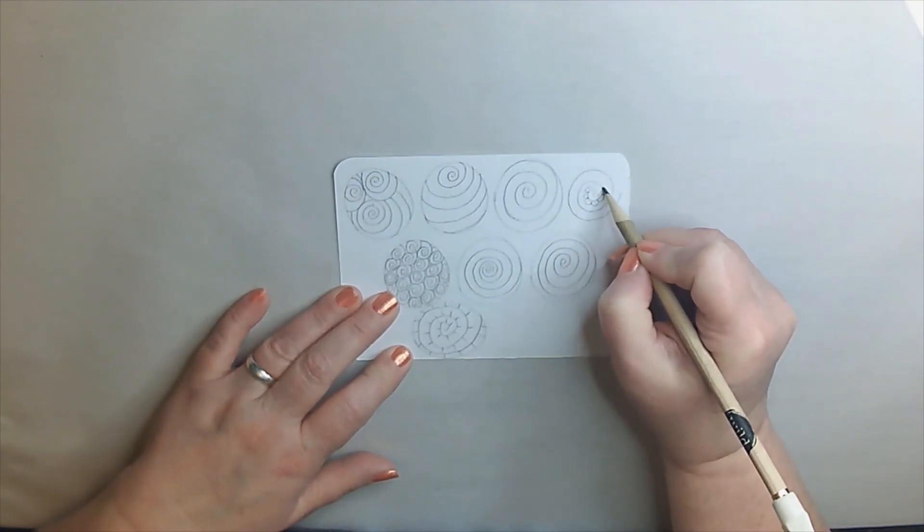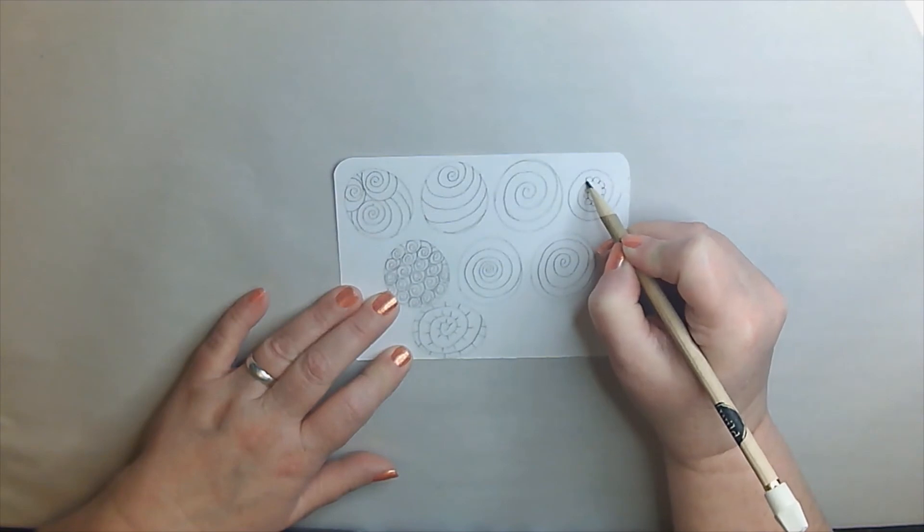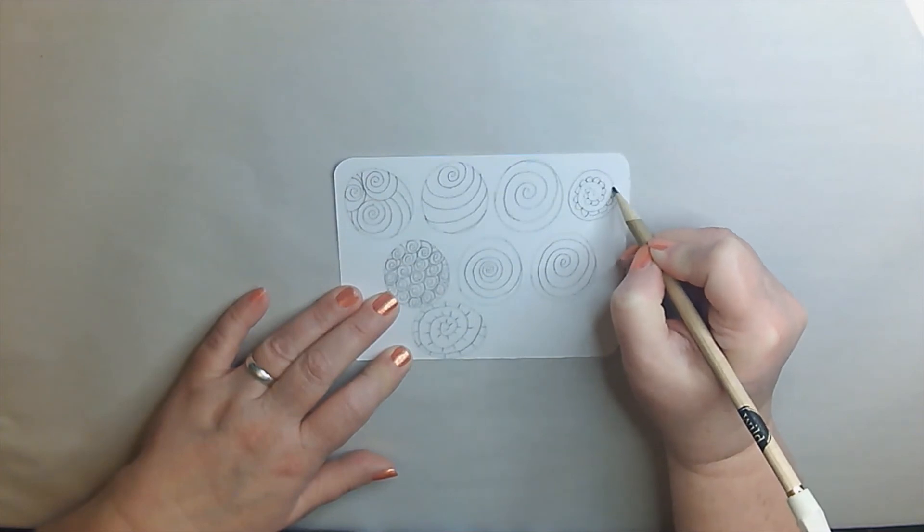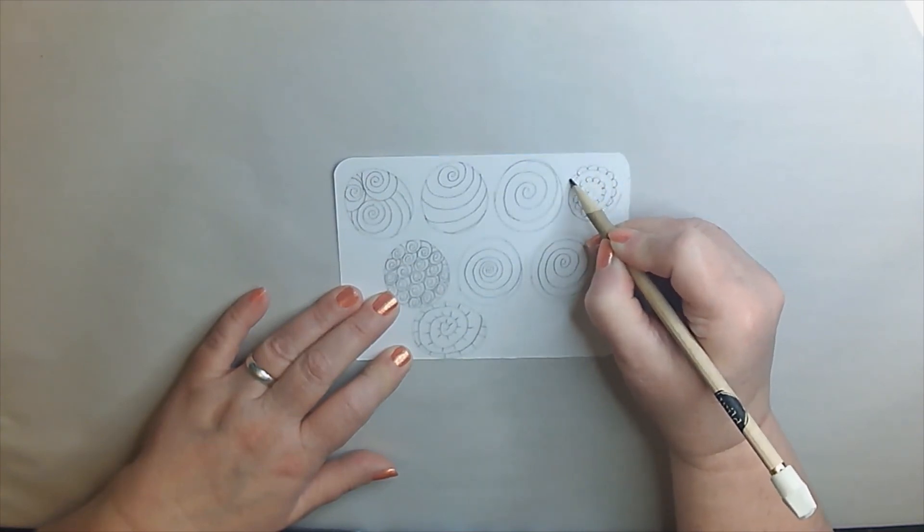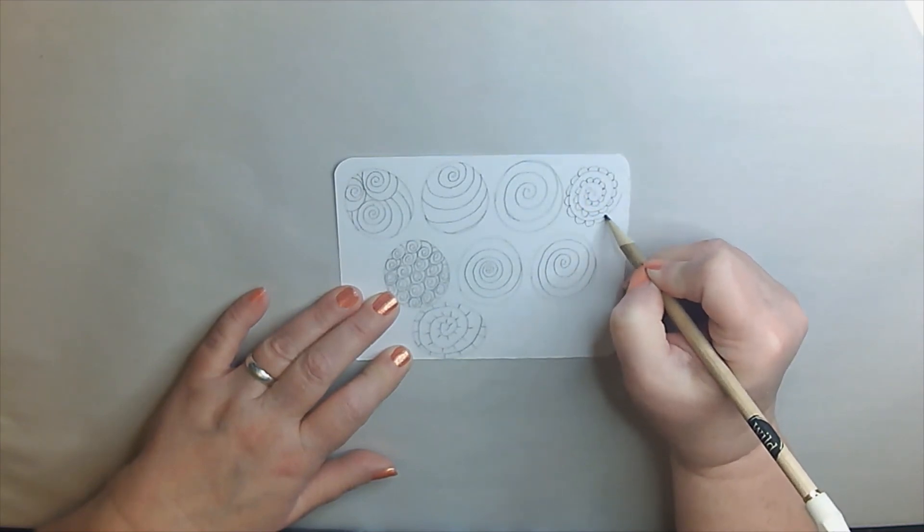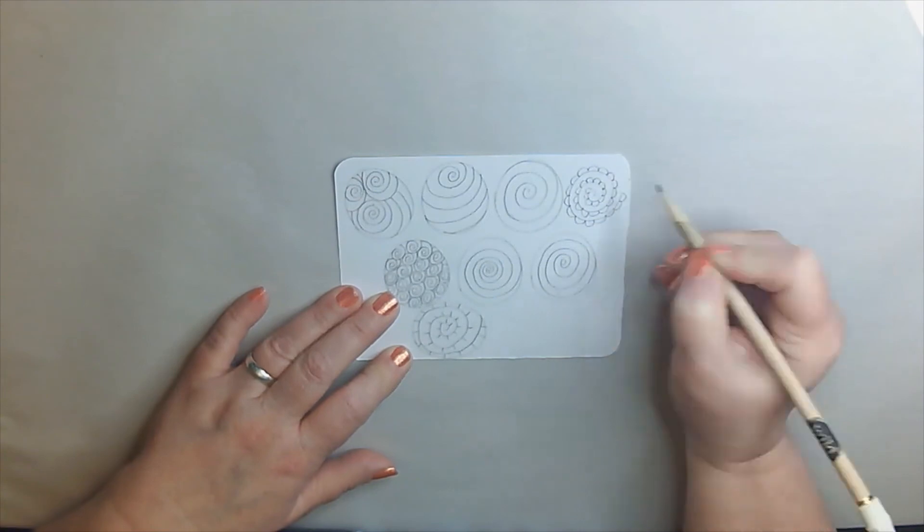I mean, here we're just going to simply add little half circles, little flower pattern. And I'll keep going until I get to the end. There you go. So I just call this a swirl pattern.